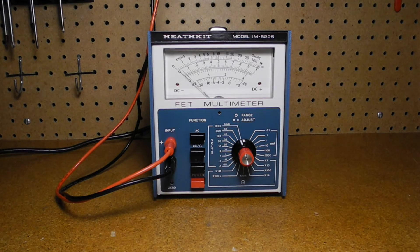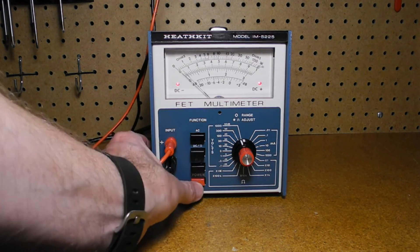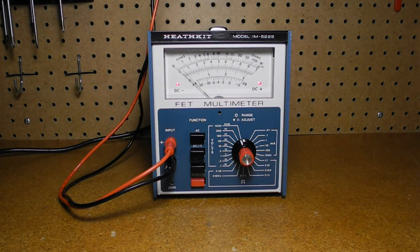The operation is pretty straight forward. The test leads connect to the plus and minus inputs. Turn the unit on using the power switch. Press the AC button to measure AC voltage or current or DC ohms to measure DC voltage or current or resistance. Press ohms low voltage to measure resistance using the low test voltage.